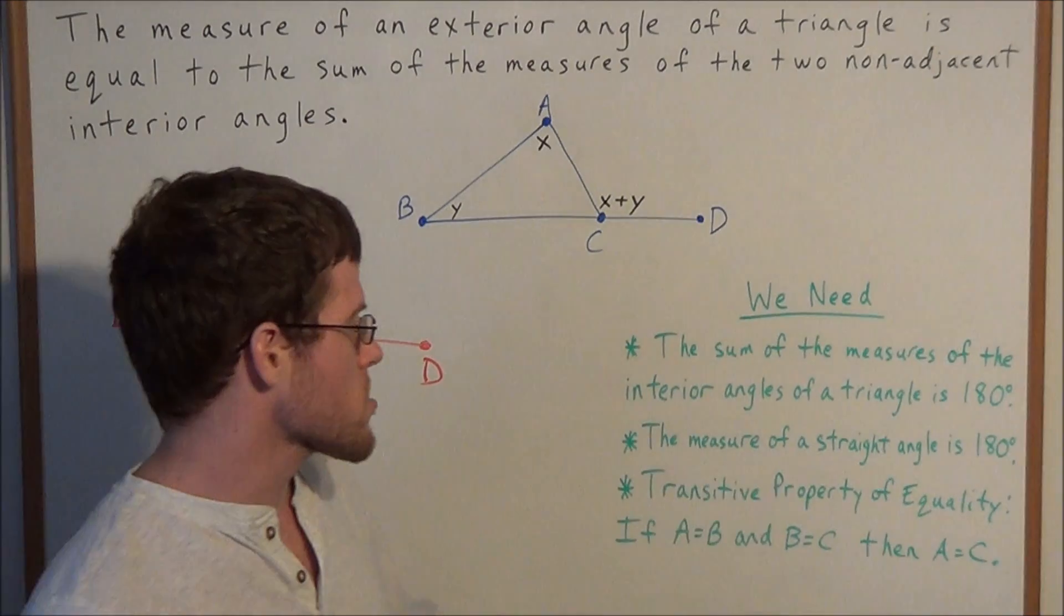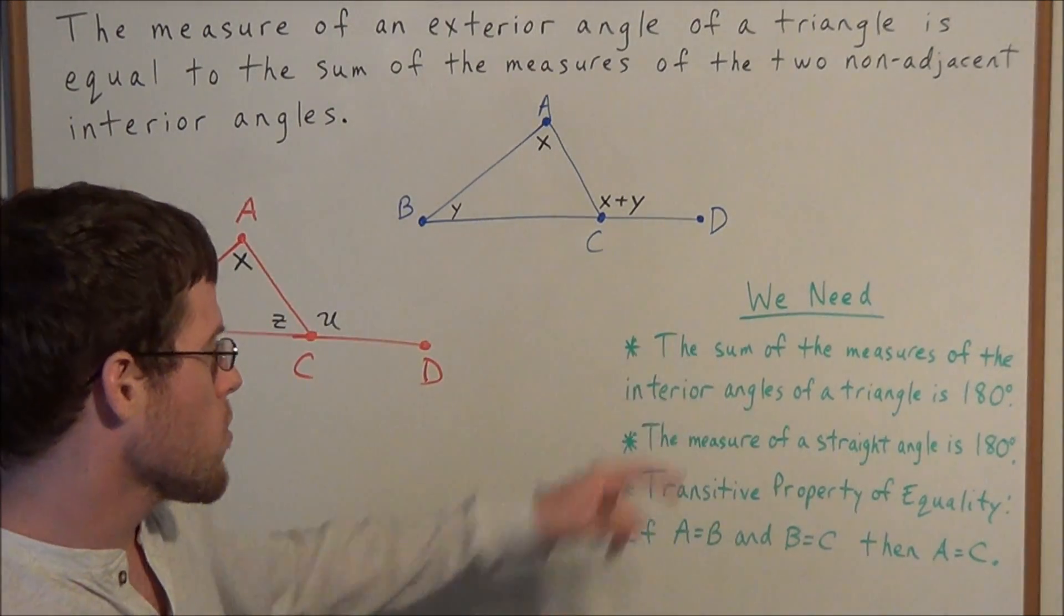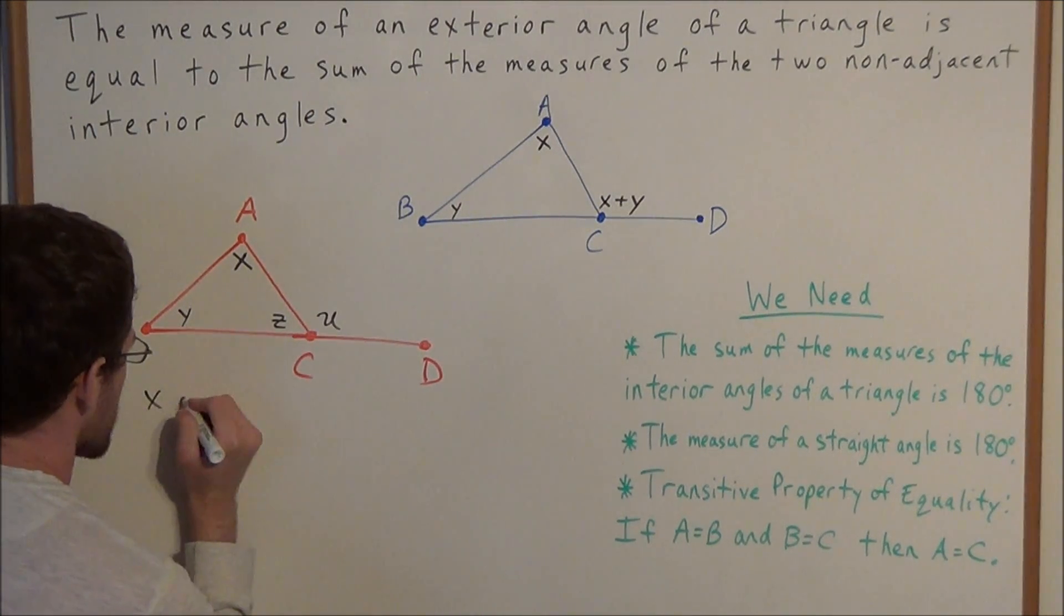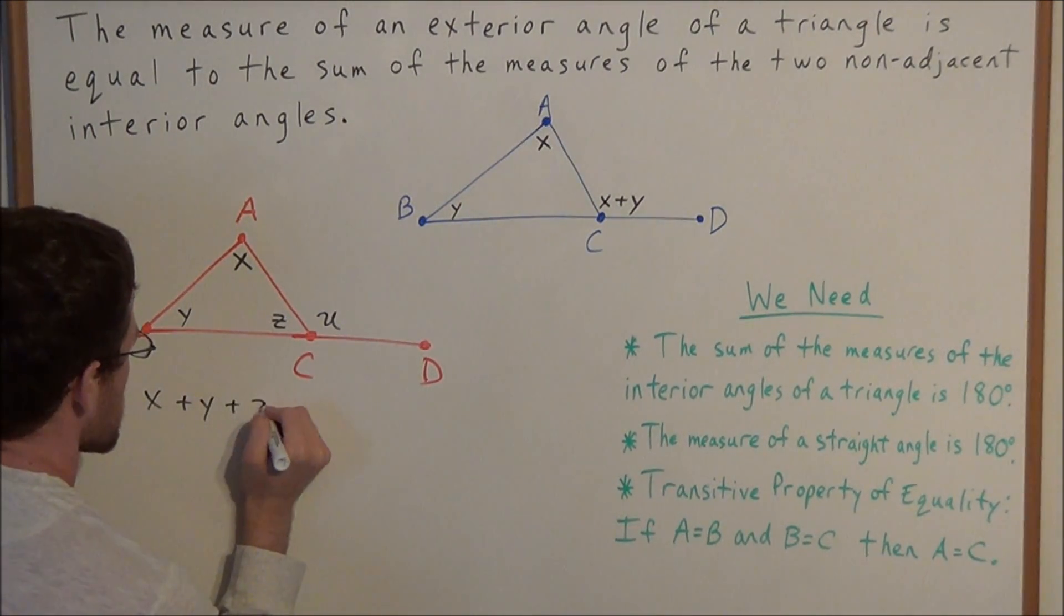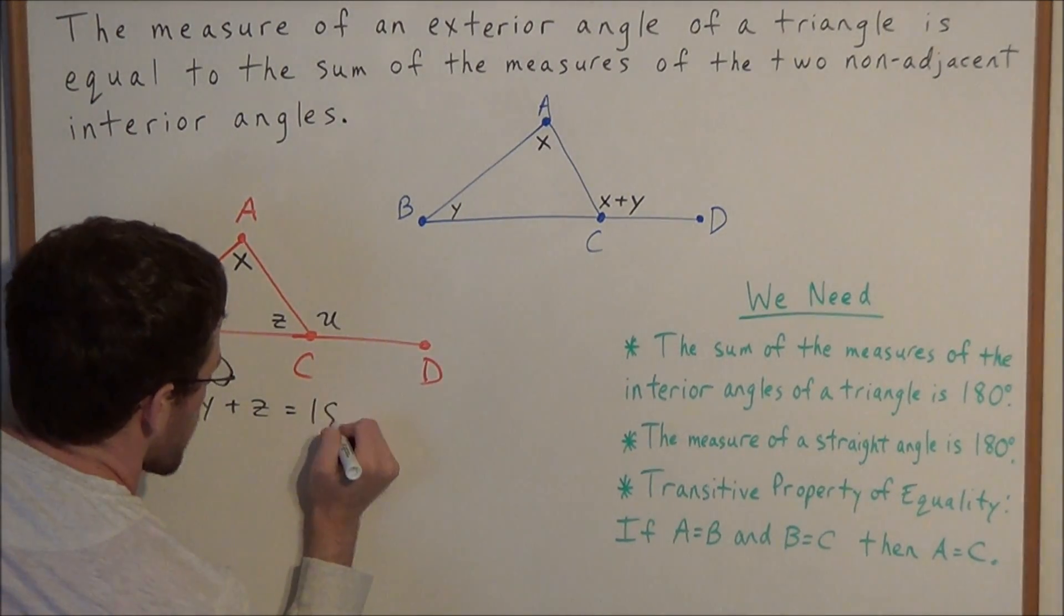We have the sum of the measures of the interior angles of a triangle is 180 degrees. That theorem allows us to say we have X plus Y plus Z, which is the sum of the interior angles of triangle ABC, is equal to 180 degrees.